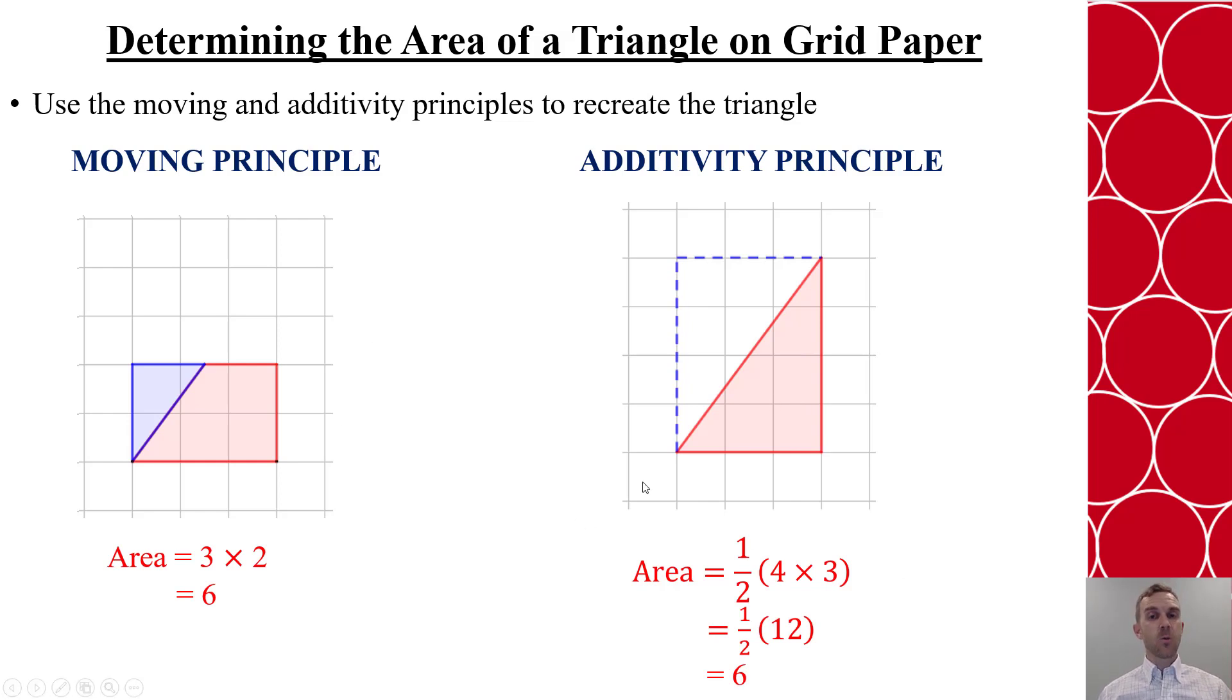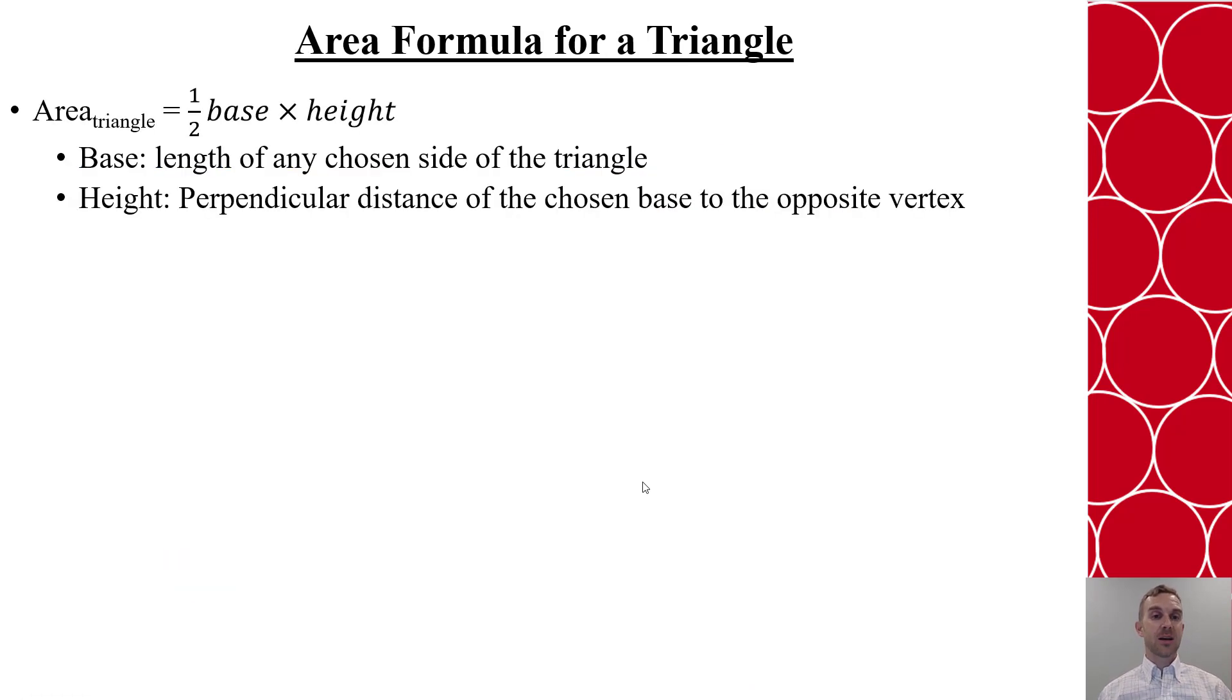This leads to why the area of a triangle is one half the base times the height. The key is that while in that image we just used, the bottom side did represent the base because that's where the 90 degree angle was, we can choose any of those sides to be our length that we will use as the base. The height will always represent the perpendicular distance from the chosen base to the opposite vertex. That's the key. I can make it work for any of the three sides.